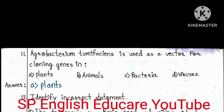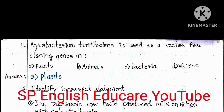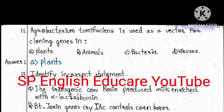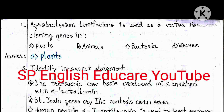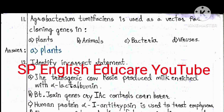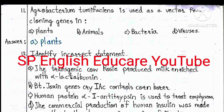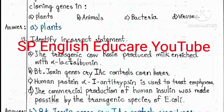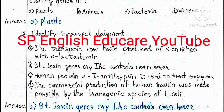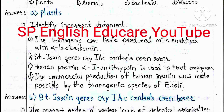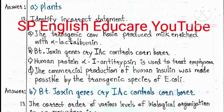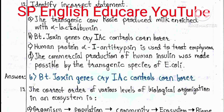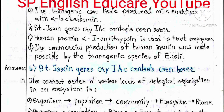Question 11: Agrobacterium tumefaciens is used as a vector for cloning genes in: A) Plants, B) Animals, C) Bacteria, D) Viruses. The answer is A — plants. Question 12: Identify the correct statement. A) Transgenic cow Rosie produced milk enriched with alpha-lactalbumin. B) Bt toxin gene cry IAc controls corn borer. C) Human protein alpha-1 anti-trypsin is used to treat emphysema. D) Commercial production of human insulin was made possible by transgenic E. coli. The answer is B — Bt toxin gene cry IAc controls corn borer.